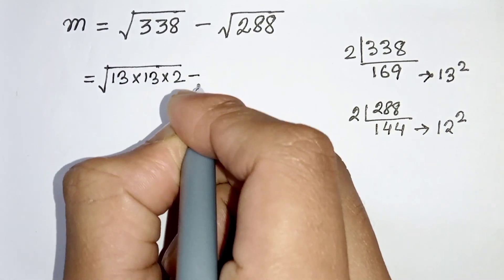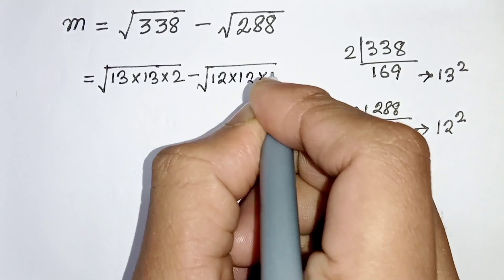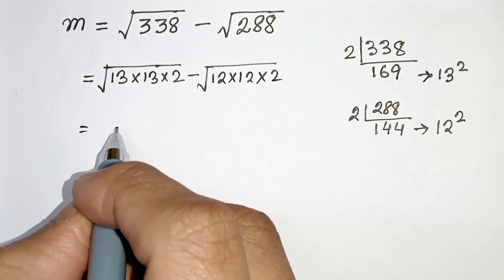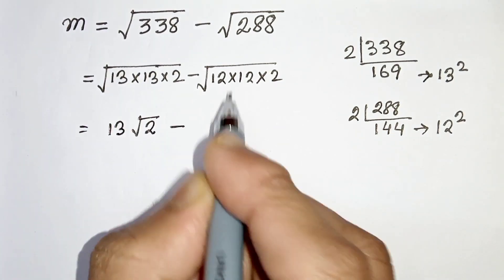So let's write this. 338 can be written as 13 times 13 times 2, minus 288 can be written as 12 times 12 times 2.